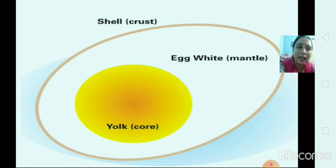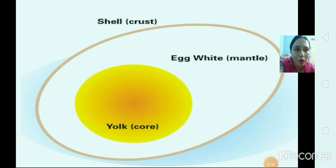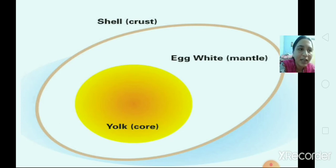Now let's see the layers of the earth. Have a look at this picture — this is a picture of a boiled egg, which is quite a common breakfast in our home. Have you ever observed how your mothers prepare this for you? First she peels the outer layer, and then comes the white portion. If you cut that white portion you will be able to see the yellow part — the yolk.